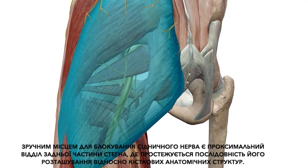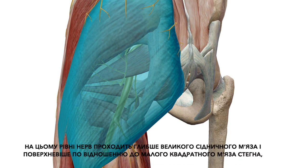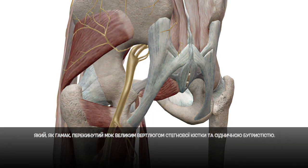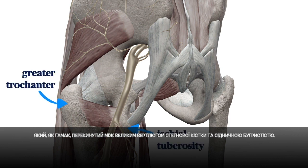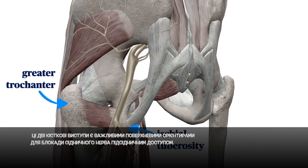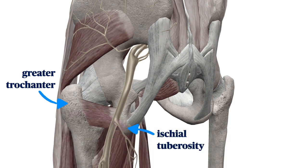A convenient place to block the sciatic is in the proximal posterior thigh, where it has a consistent relationship with the bony anatomy. At this level, the nerve is deep to the gluteus maximus muscle and superficial to the small quadratus femoris muscle, which is slung like a hammock between the greater trochanter of the femur and the ischial tuberosity. These two bony prominences are important surface landmarks for the subgluteal sciatic nerve block.